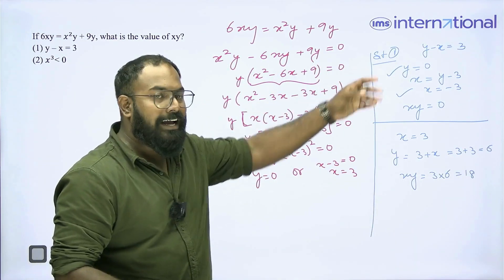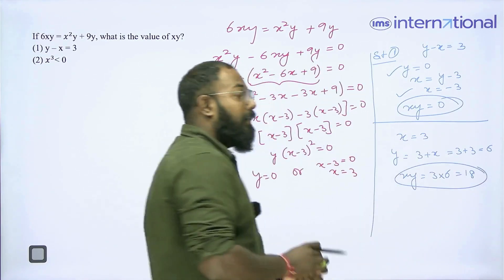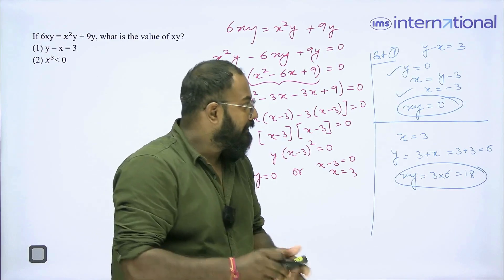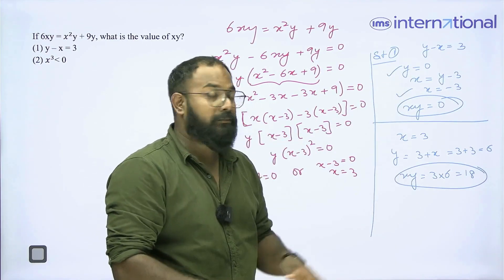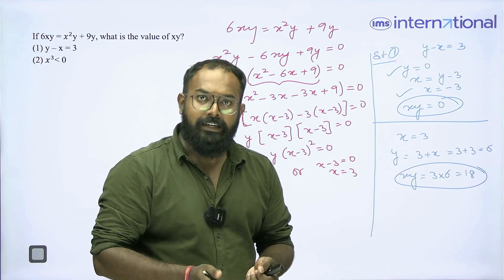Now, using statement 1, I am getting two different values of xy. But the statement is said to be sufficient if I get a unique value. Since I am getting two different values of xy, that means statement 1 alone is not sufficient to answer the question, clear?